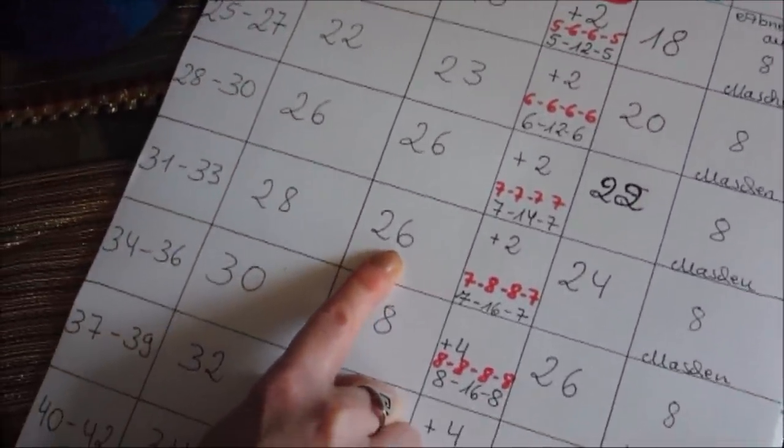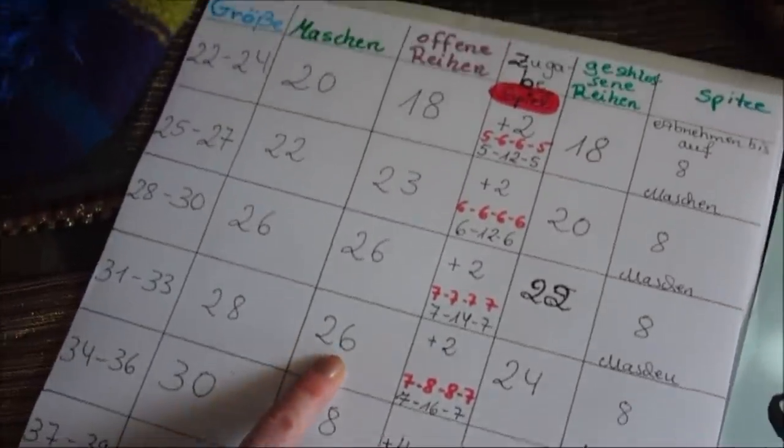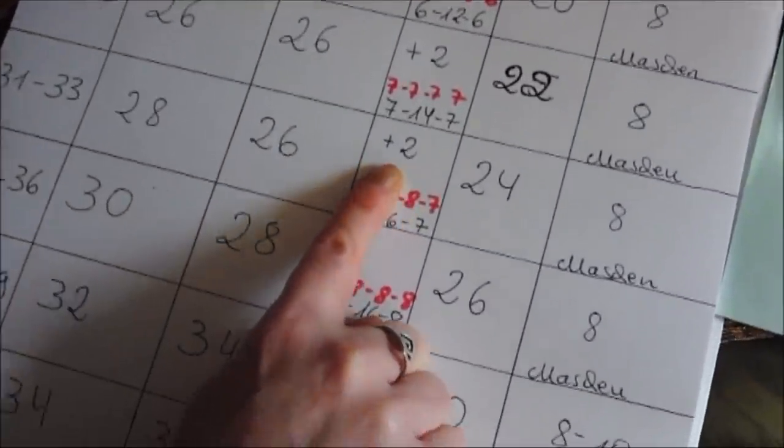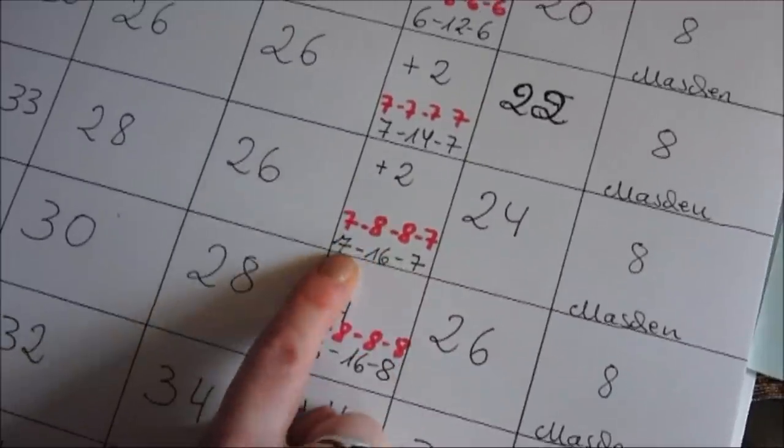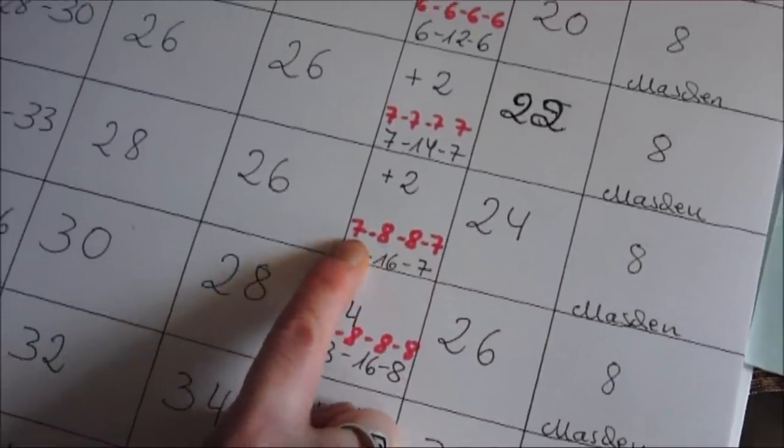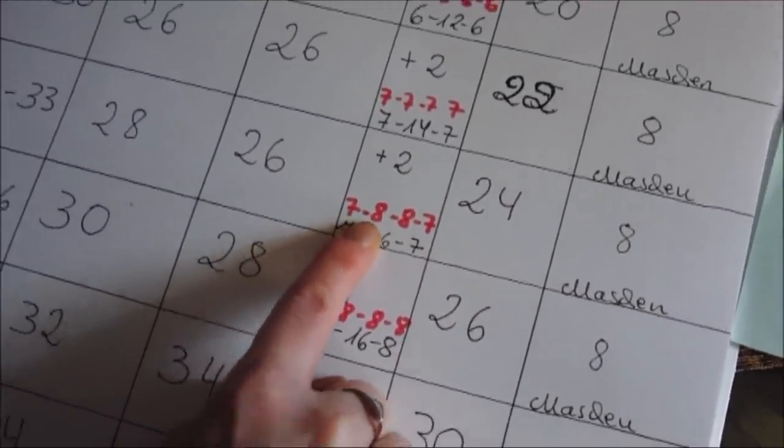26 offene Reihen stricken, dann auf das Spiel bringen und zwei Maschen zunehmen. Dies bedeutet, wie viel ihr auf das Spiel jeweils macht, auf jede Nadel.